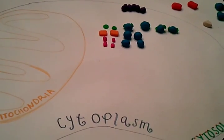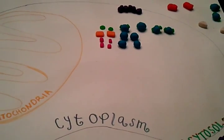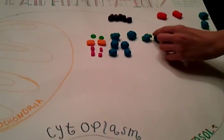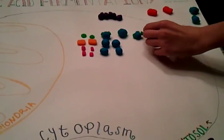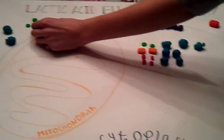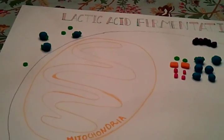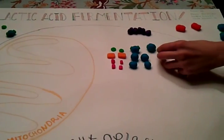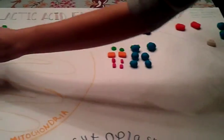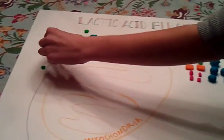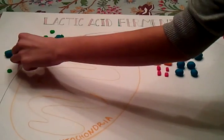The energy investment stage begins when 2 ATP are used, and they each lose one phosphate group to become 2 ADP.